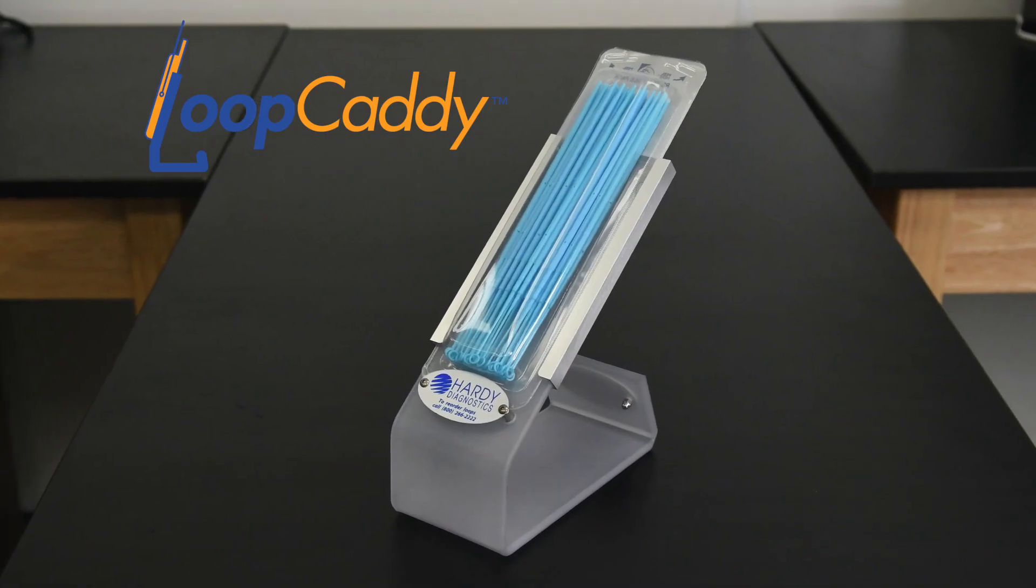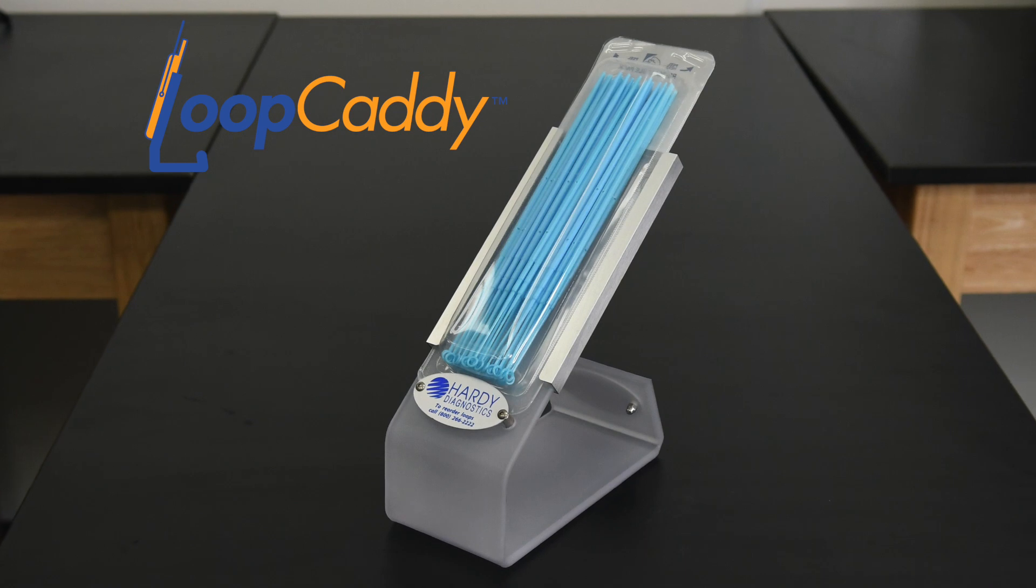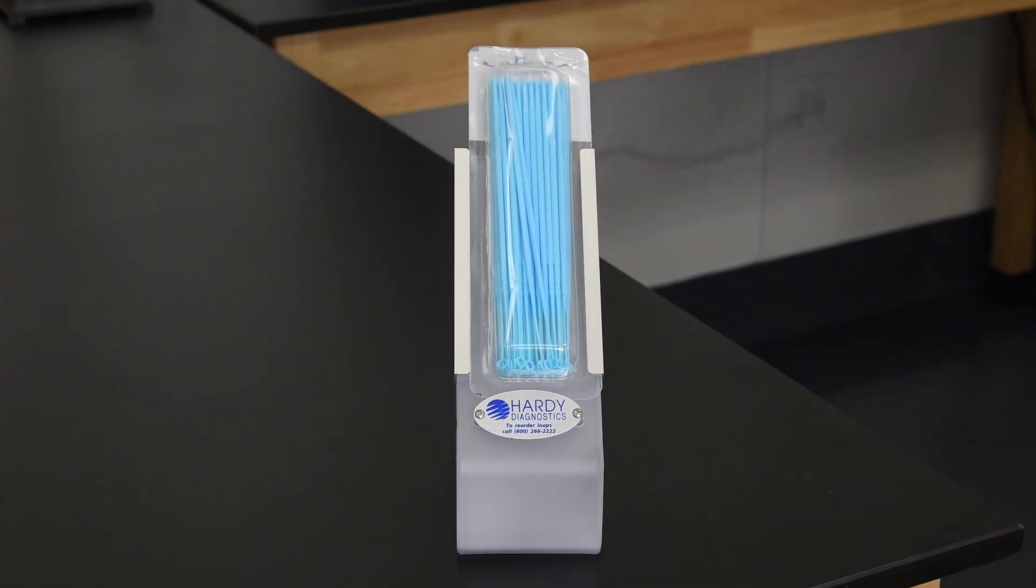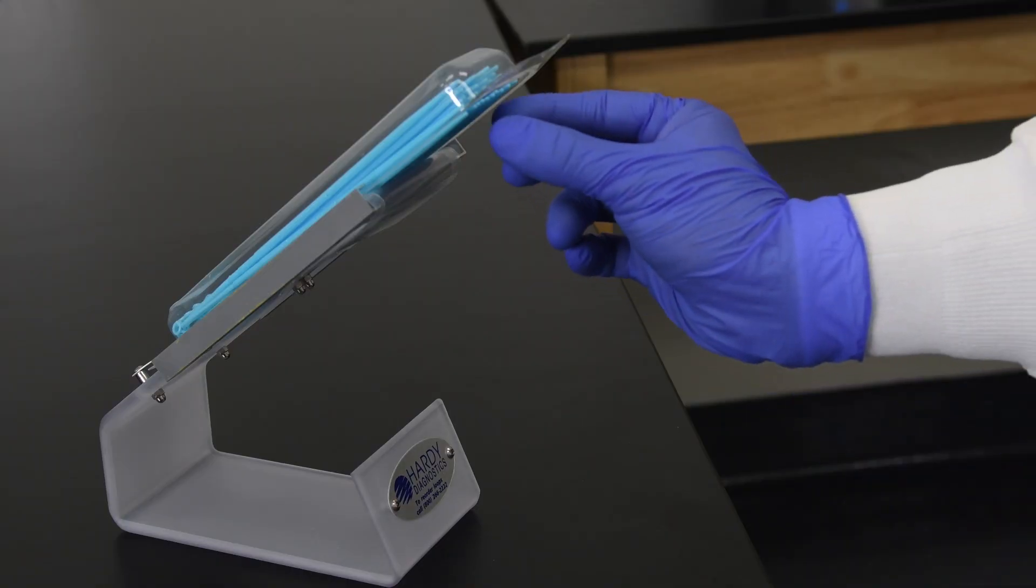The Loop Caddy system is an acrylic loop holder for use with Hardy Diagnostics resealable loop pouches. The loop pouch slides onto the loop holder, which holds it steady for easy one-handed dispensing.